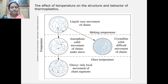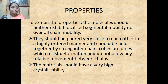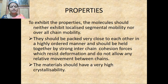Considering how molecules appear in liquid, amorphous, and glass states — and how glass transition temperature and melt temperature convert them into a crystalline state where chain movement is restricted — to exhibit the properties of a fiber, the molecule should neither exhibit localized segmental mobility nor overall chain mobility. They should be packed very close to each other in a highly ordered manner and held together by strong interchain cohesion forces that resist deformation and do not allow relative movement between chains. The material should have high crystalline ability.